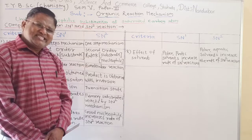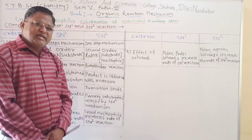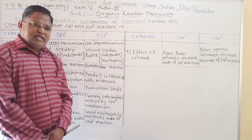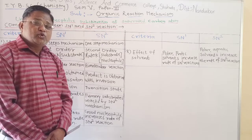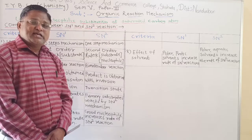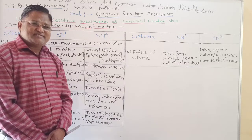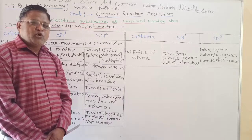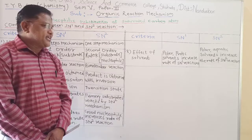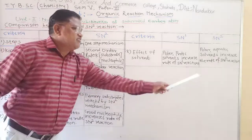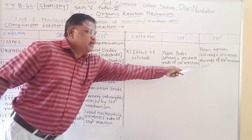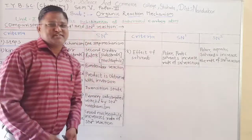So instead of using polar protic solvents, in case of SN2 reaction, we should use polar aprotic solvents. Polar aprotic solvents increase the rate of SN2 reaction.